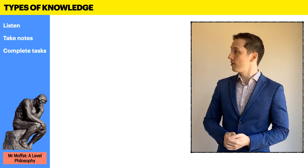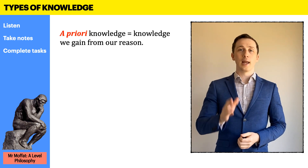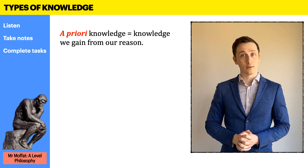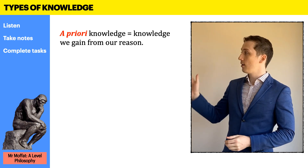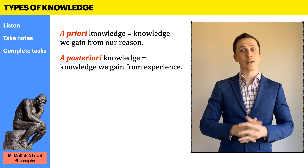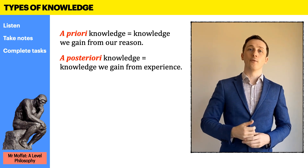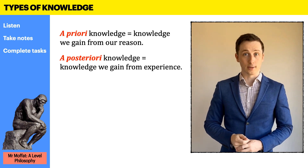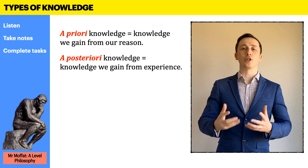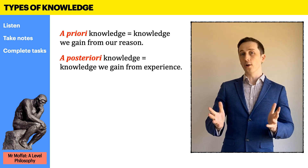Let's start with the definitions. A priori: a priori is knowledge we gain from reason. A posteriori: a posteriori knowledge is knowledge we gain from experience. This is the simplest way we can draw the distinction between these two types of knowledge.